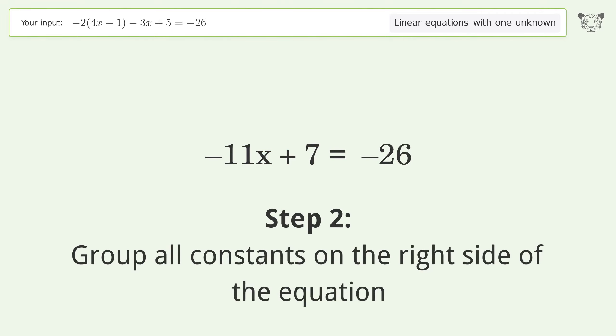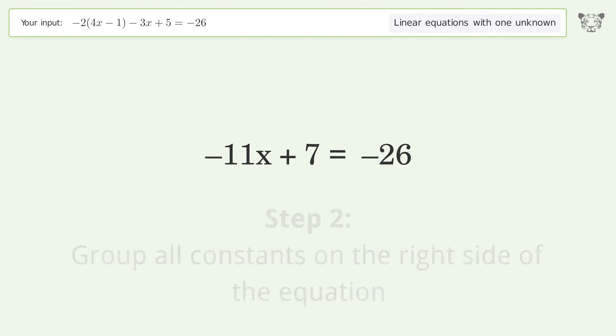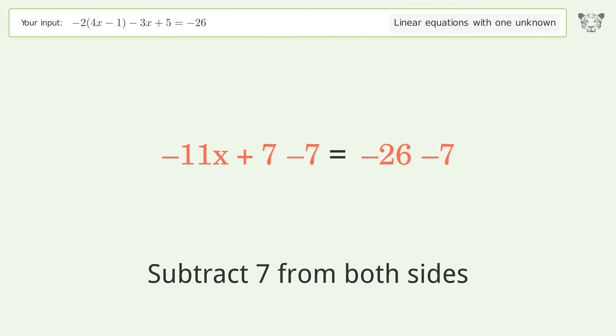Group all constants on the right side of the equation. Subtract 7 from both sides. Simplify the arithmetic.